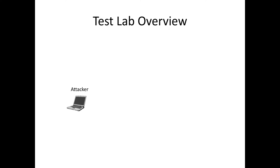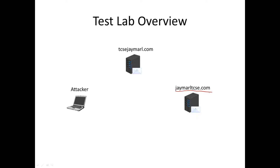Hi everyone. We'll continue with the email backscatter attack and prevention demo. I have my local machine where I will initiate the attack. We also have two SMTP servers with domains tcsejmirl.com and jmrltcse.com. From the attacker side, I will be spoofing jmrltcse.com and my target is tcsejmirl.com — meaning I will be sending an email to this server and the NDR will be sent back to tcsejmirl.com, which will eventually get blacklisted.